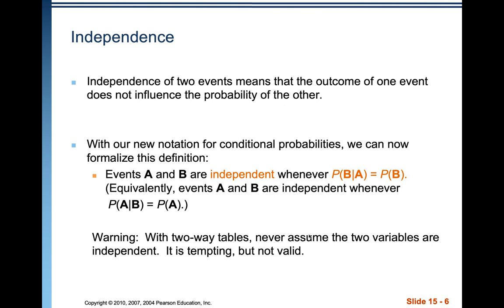One way to tell that two events are independent is if the probability of B given A equals the probability of B — meaning whatever outcome you get for A doesn't change the probability of B. For example, the probability of drawing the Queen of Hearts is 1 out of 52 whether or not you've successfully rolled a one on a die.